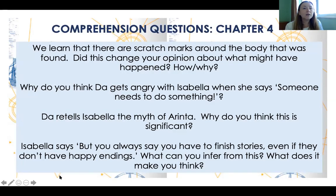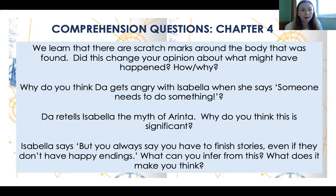Chapter four question: We learn there are scratch marks around the body that was found — did this change your opinion about what might have happened, and how or why? When we first heard that Katta's body had been discovered there was no description of what might have happened, so you may have drawn your own conclusions based on what you know about characters like Governor Adory and his guards. Do the scratch marks change your opinion, and if so, what do you now think?